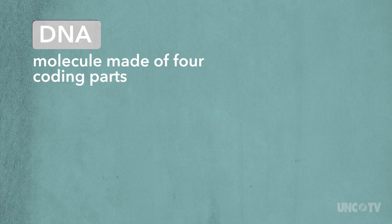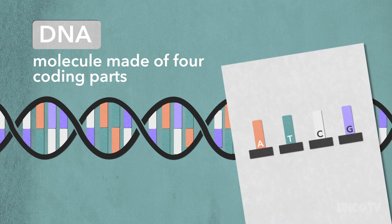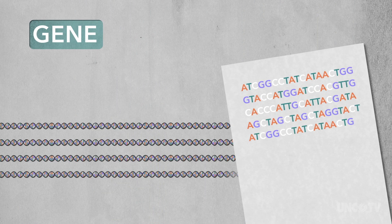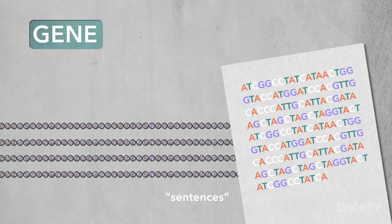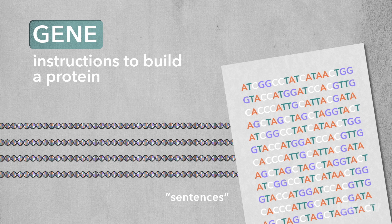And the story starts with DNA, which is a molecule made of four basic coding parts, kind of like an alphabet but with only four letters. Those letters are arranged into sentences, also known as genes. Each sentence or gene is the instructions to build a protein.